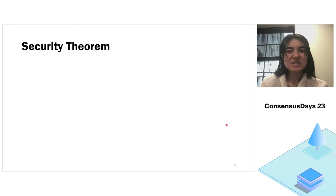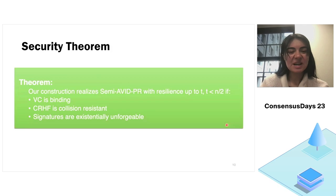So how does our scheme stand in comparison with other VIDs? So security theorem for our scheme is as follows. Our construction realizes semi-AVIDPR with N nodes up to T, where T can be chosen arbitrarily and can be chosen up to one half. If our vector commitment is binding and our hash function is collision resistant, and if our signatures are existential unforgeably. So the first two give us commitment binding and the second and third give us availability.